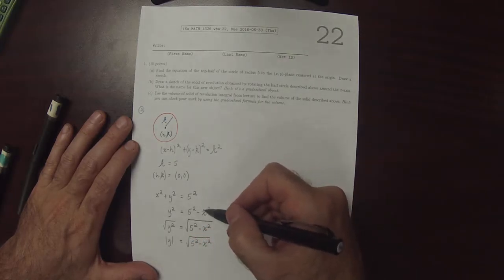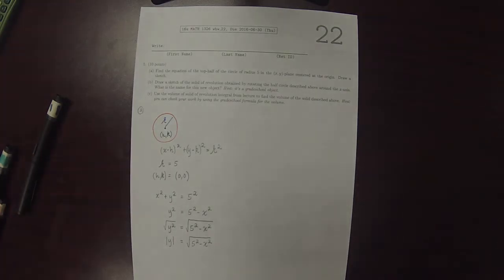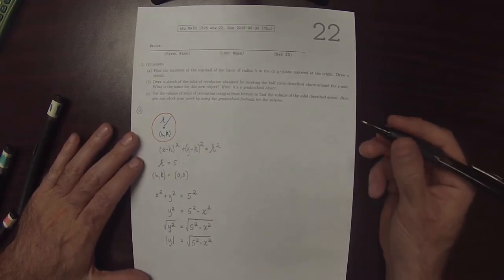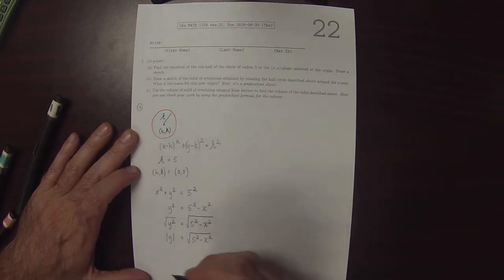So all of these equations are equations for the entire circle. So we just want the top half. This absolute value splits the equation into top and bottom halves.